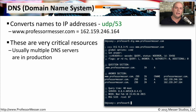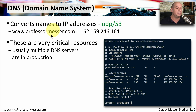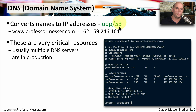Without the Domain Name System, or DNS, we would have to remember the IP address for every device on the internet. Instead, we can remember names like www.professormesser.com, and DNS behind the scenes converts that name to an actual IP address. DNS uses UDP port 53 to communicate with the DNS server.